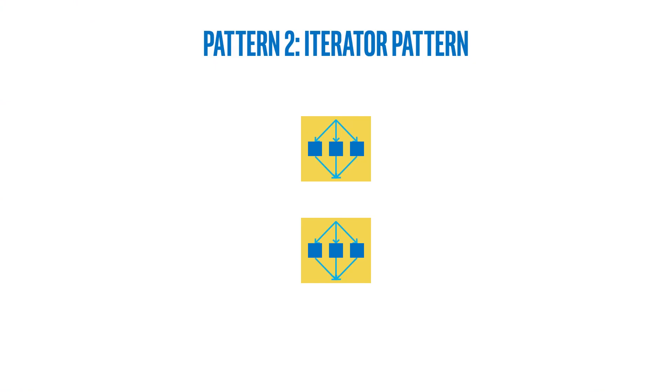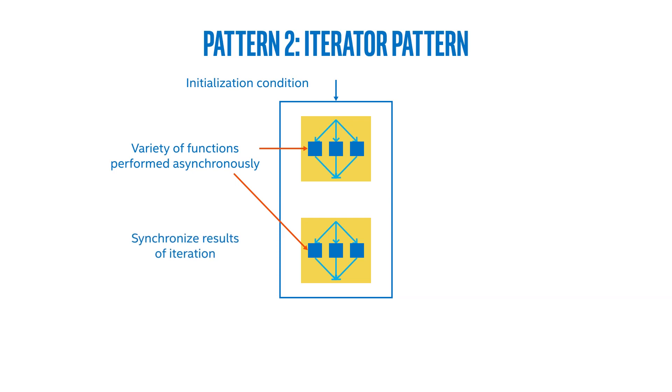The second structural pattern we consider is the iterator pattern. This is another very simple pattern. We have an initialization condition, we go into a large body where a variety of functions can be performed asynchronously. At the end of that body, the results are synchronized. Then we typically ask an exit condition: is that exit condition met? If so, then we simply continue. If not, then we iterate again.